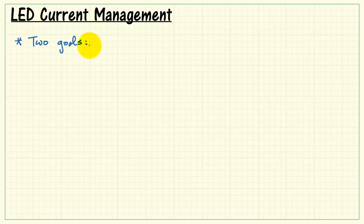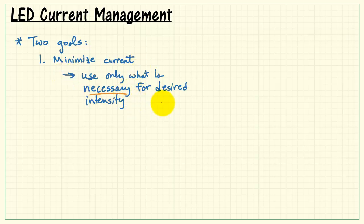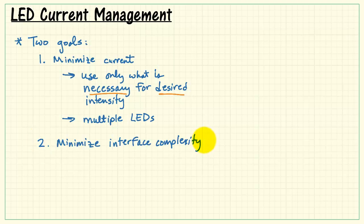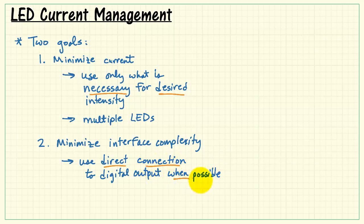We really have two goals when it comes to managing the current associated with an LED. First, we want to minimize the current. That is, we want to only use what is necessary for the desired intensity. This is especially important when we have multiple LEDs. Our second goal, we'd like to minimize the complexity of the interface. That means that we would like to use a direct connection to the digital output when that's possible.